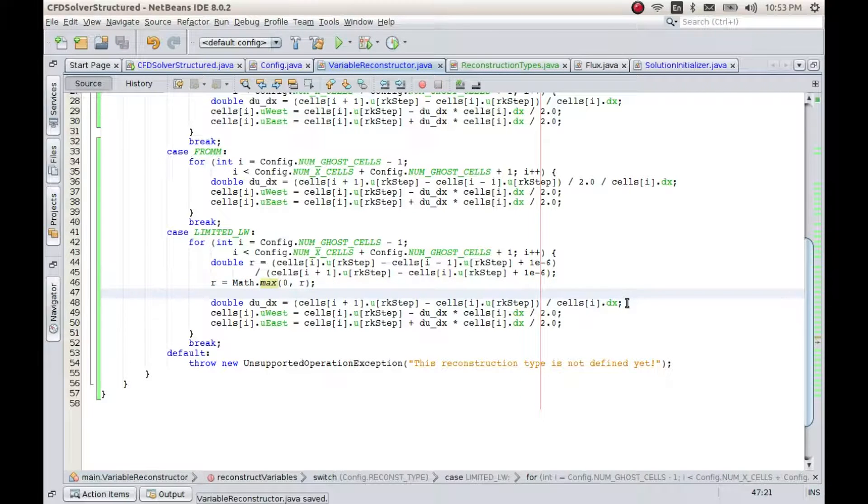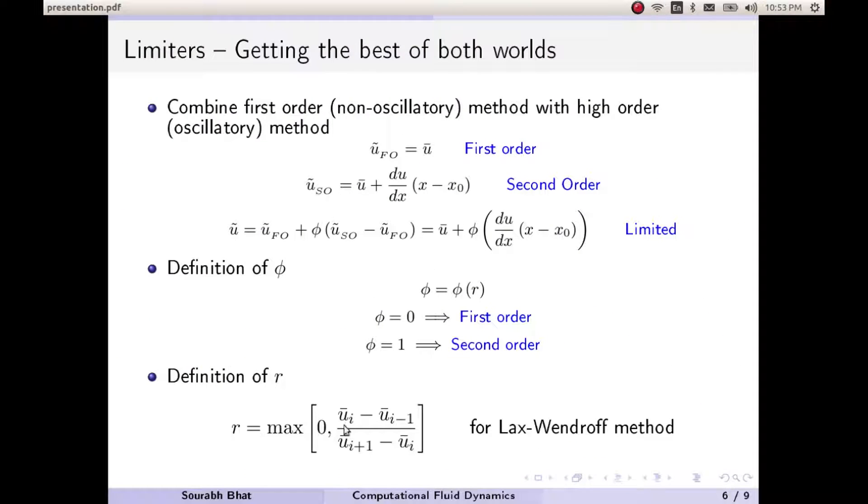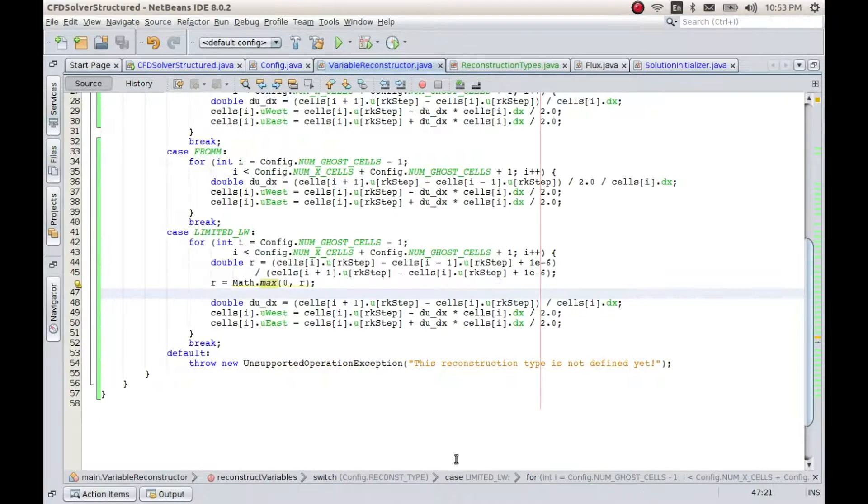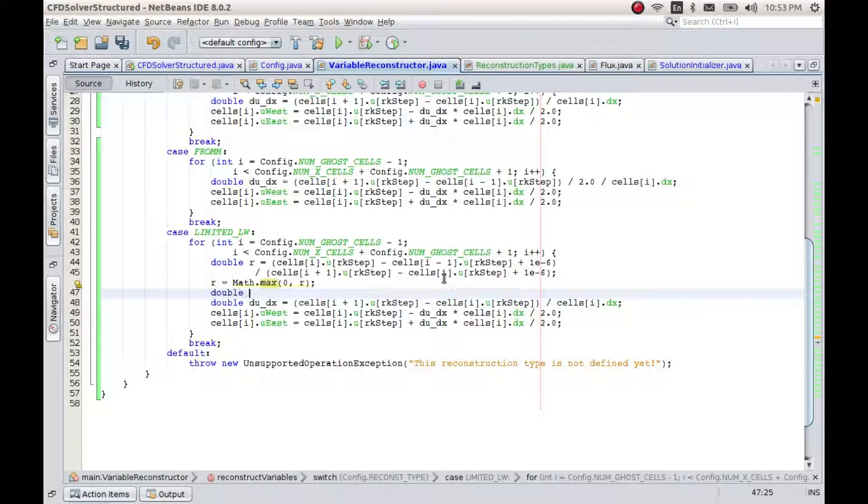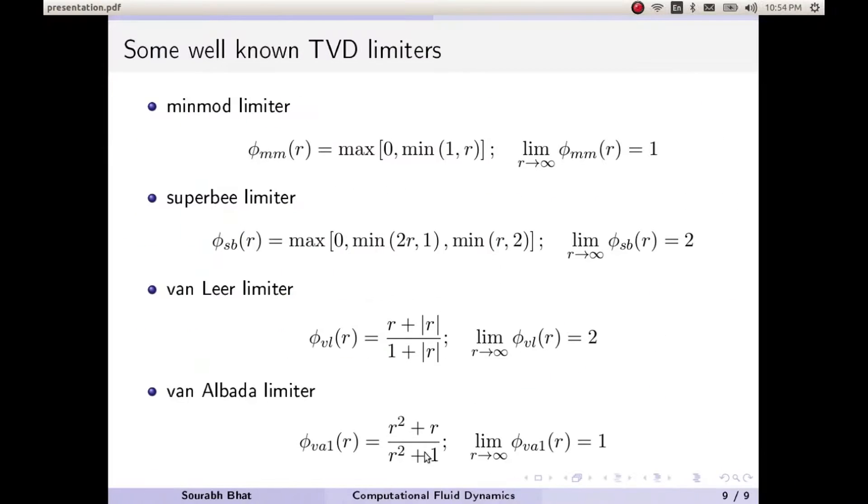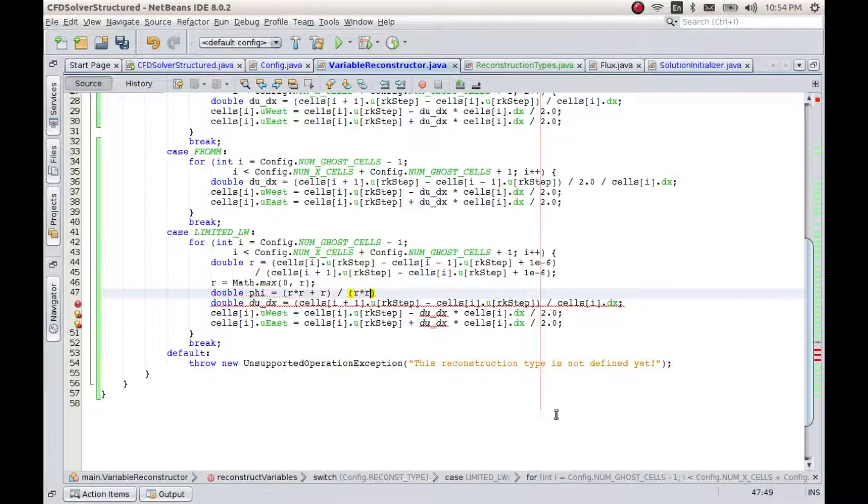Now we can calculate the value of phi. To do that, we will use the Van Albada limiter. The value of our limiter is going to be (r² + r) / (r² + 1).